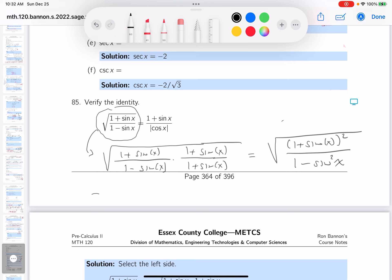Let's keep moving. Move over here. You're going to get—just do the top. That's going to be 1 plus sine x quantity squared.